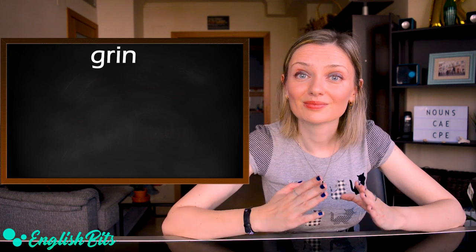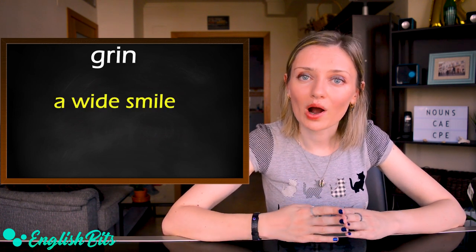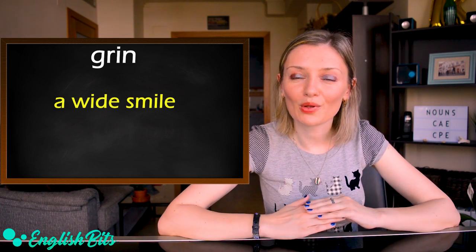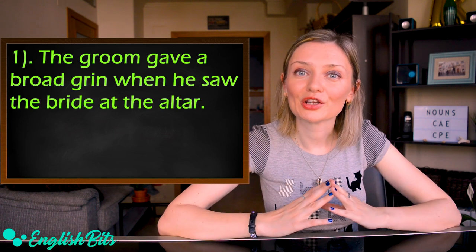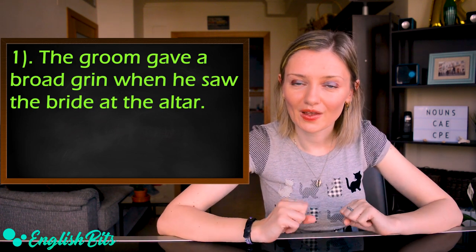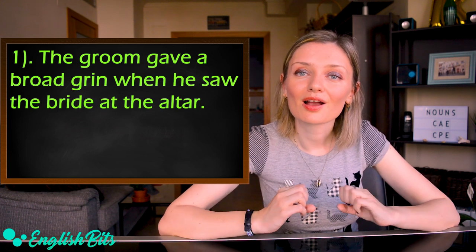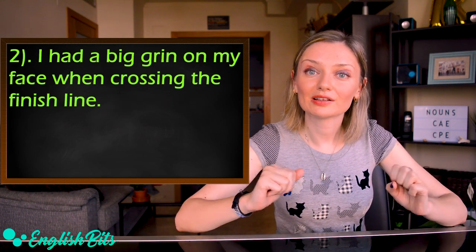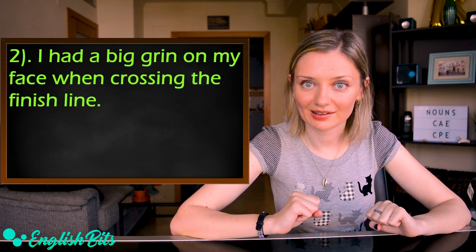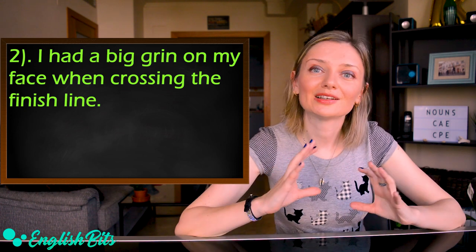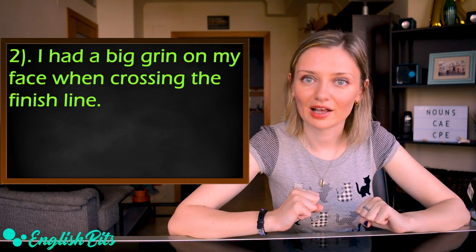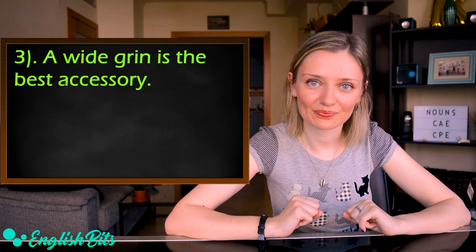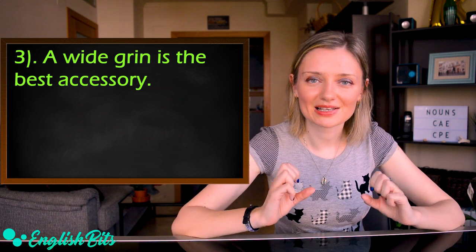Number eight is 'grin' — a wide smile. Examples: The groom gave a broad grin when he saw the bride at the altar. I had a big grin on my face when crossing the finish line. A white grin is the best accessory.